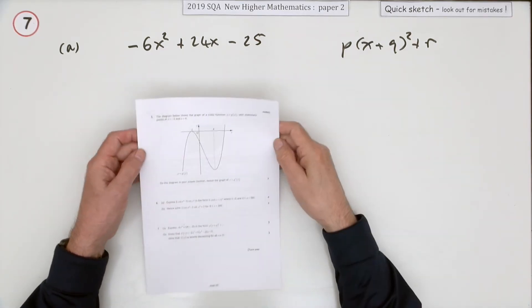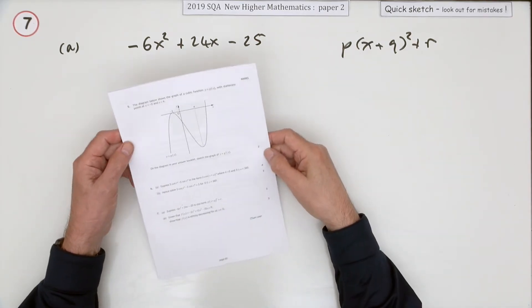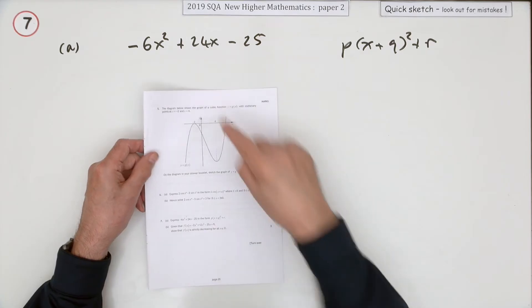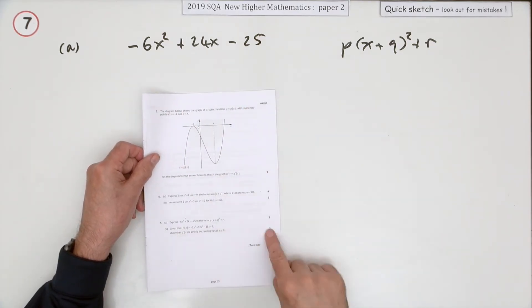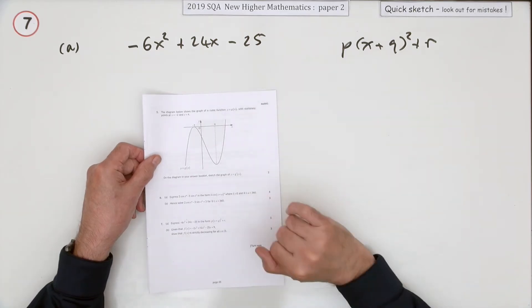Number seven from paper two of the 2019 higher maths. We need to complete the square, six mark question. Three marks for completing the square and then there must be another three marks for doing something with it.